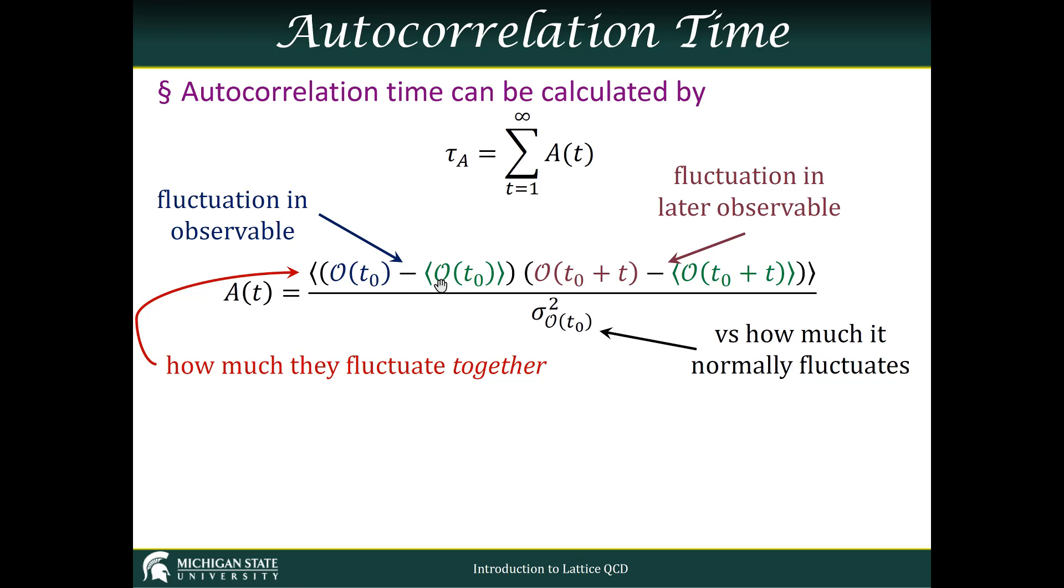We want to find the difference of that from its mean. So this is how much our observable is fluctuating relative to the mean. That should look familiar from standard deviation calculations.